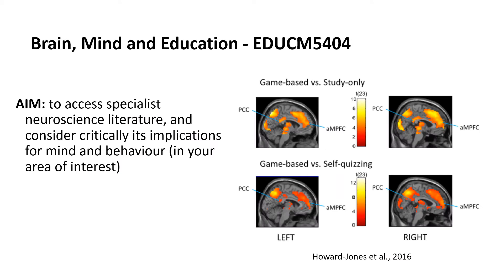But the aim of this unit is to essentially give you a very important set of tools that allows you to access specialist neuroscience literature in the area that is of interest to you and consider its critical implications for mind and behaviour and be able to reflect on those.